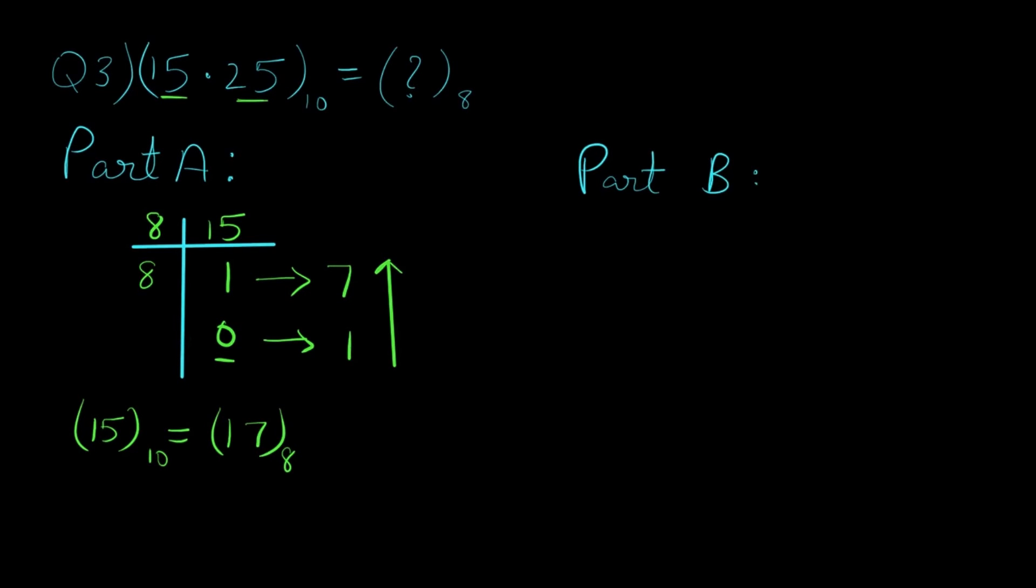Now for part B we have 0.25 which we multiply with the base value of octal number system, that is 8, and we get the answer as 2.00. Now we are interested in the integer part so we write it separately and truncate this or ignore this for the next iteration. So for the next iteration we have 0.0 which when multiplied with 8 will again give us the value 0.